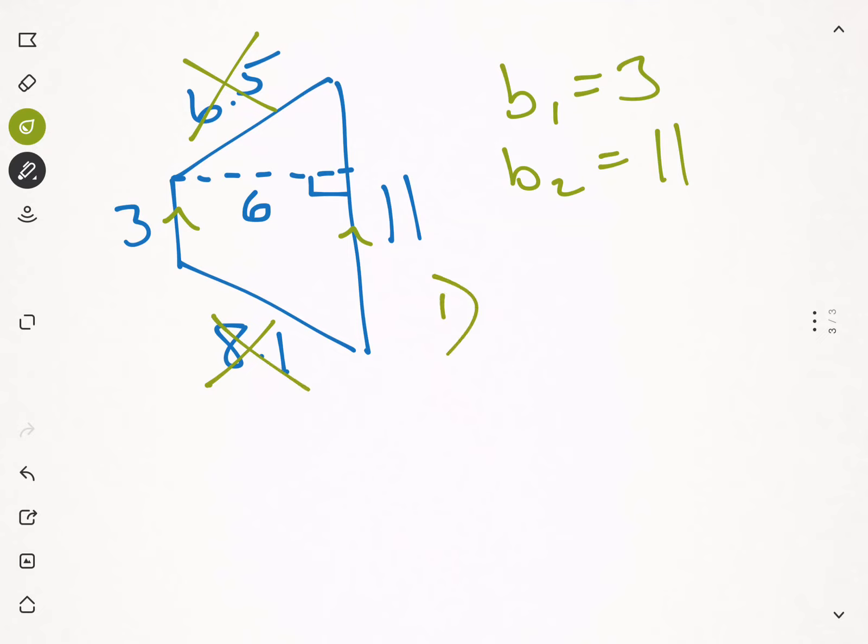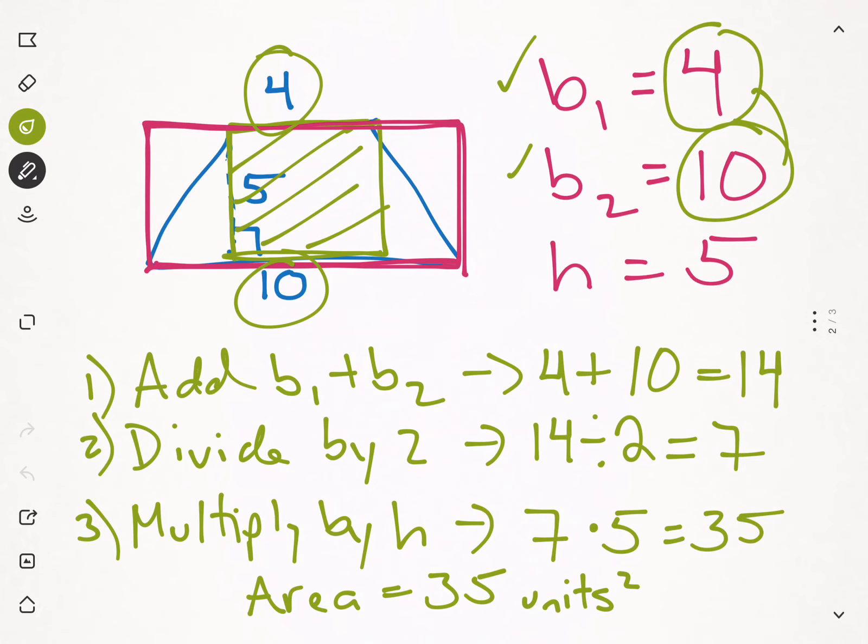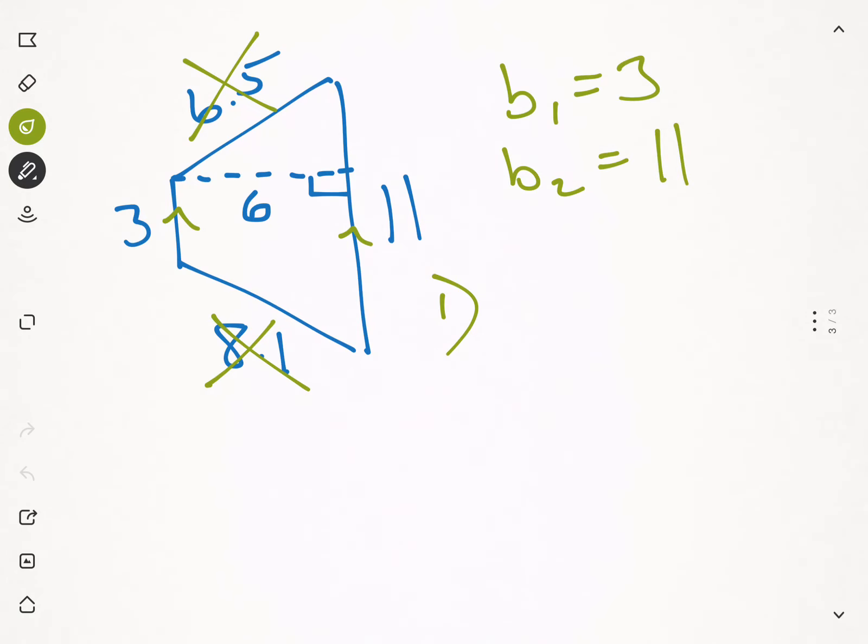So step one, we're going to do what with the bases? We are going to add base one and base two. So what do we do with three and eleven? We add them. So three plus eleven is fourteen. And then after we add them, what do we do? We're going to divide by two to find the Goldilocks base. And fourteen divided by two is seven. And then we're going to multiply that by the height. Seven times, what is the height? Six.